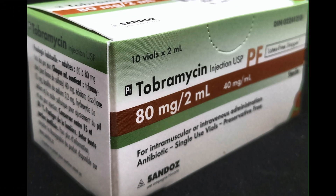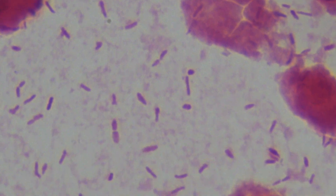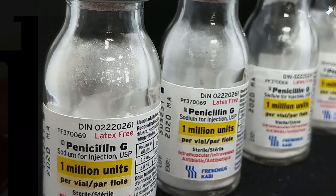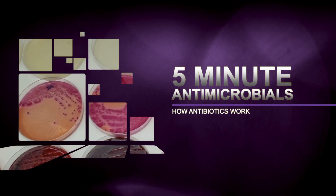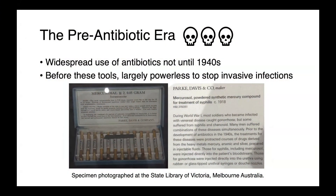Antimicrobials are among the most important drugs to modern medicine, and using them appropriately requires a detailed knowledge of the mechanism of action and spectrum of activity of each drug class. Any discussion of antibiotics necessarily starts with the pre-antibiotic era. These are tools that we've really only had since the 1940s, and before they were developed, we were largely powerless to stop invasive infections. This is a picture of some mercury that was used in the pre-antibiotic era for treating syphilis and gonorrhea, so the importance of antimicrobials really can't be overestimated.